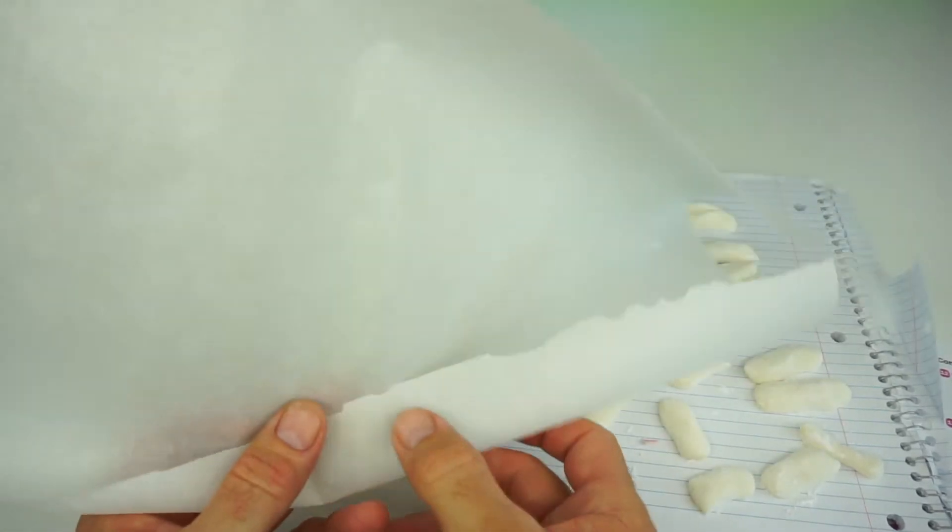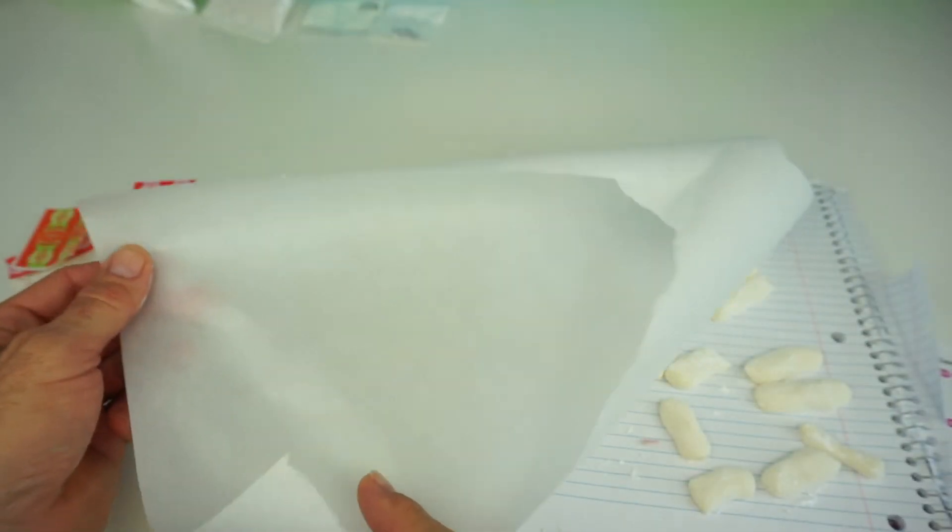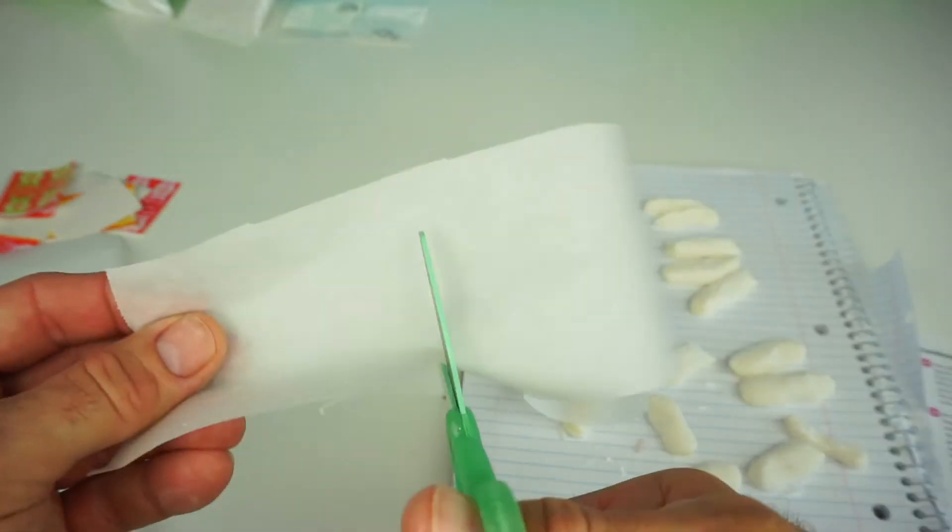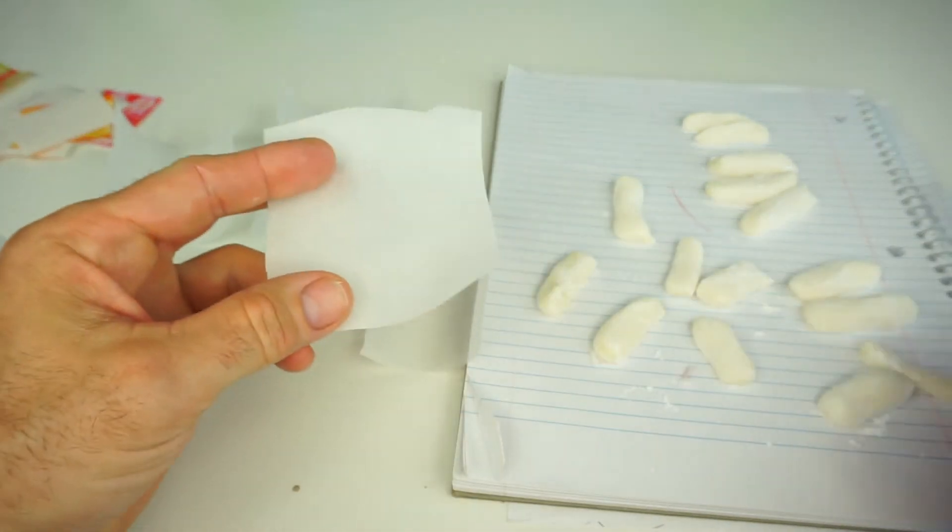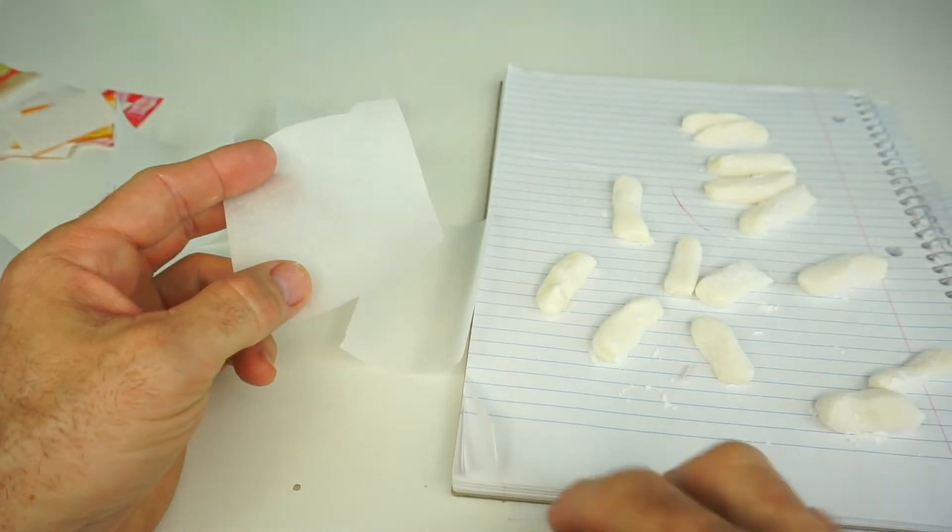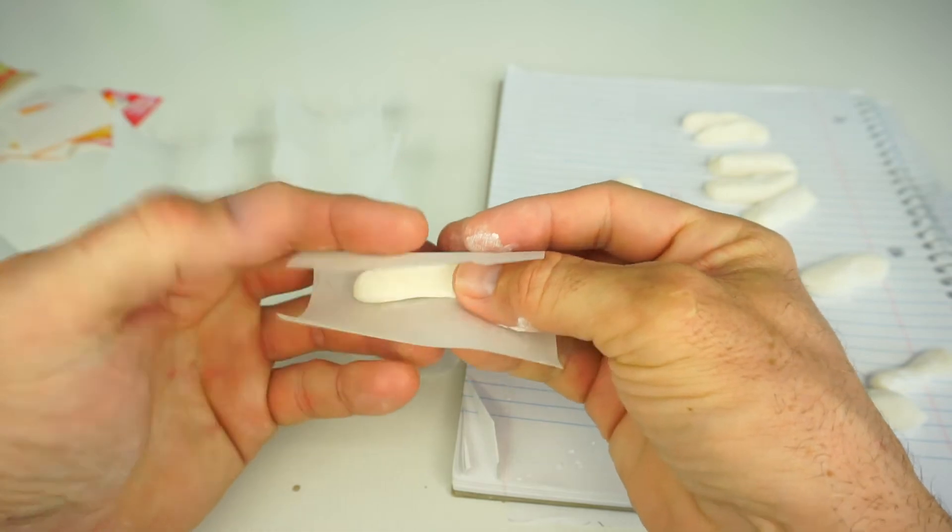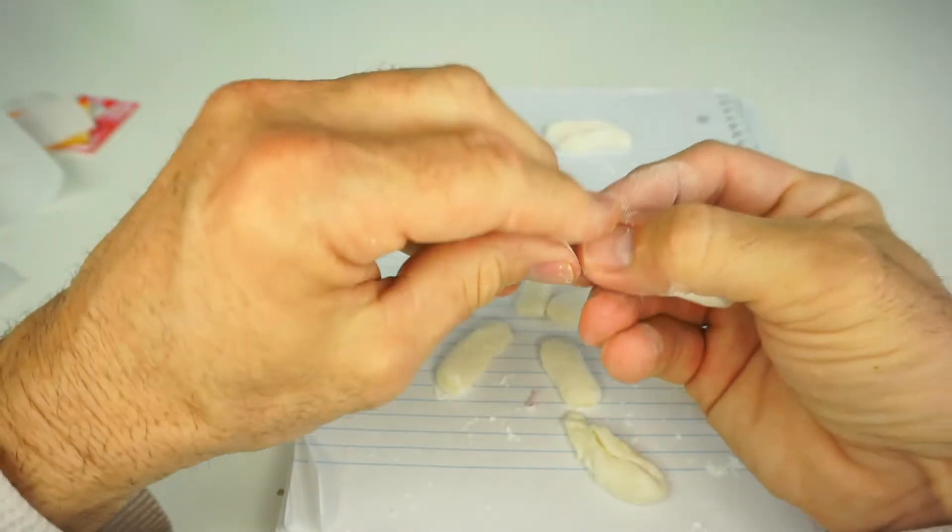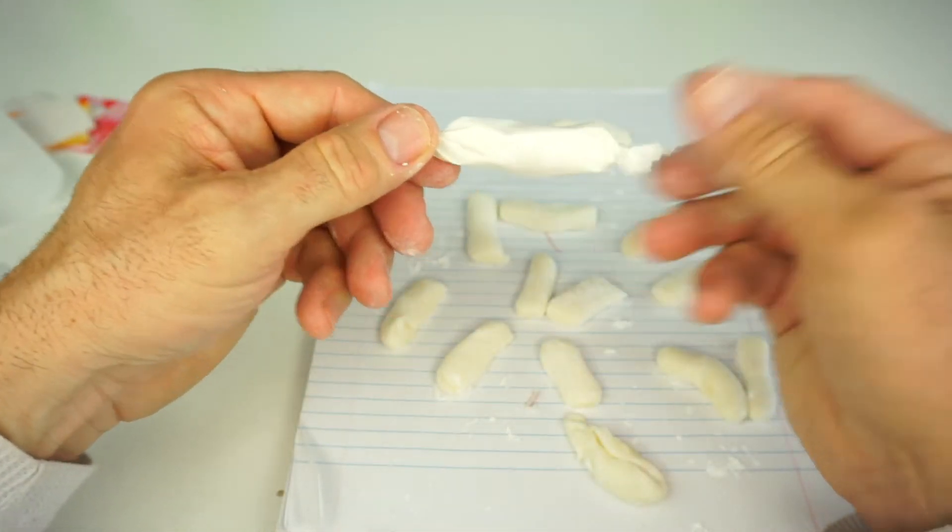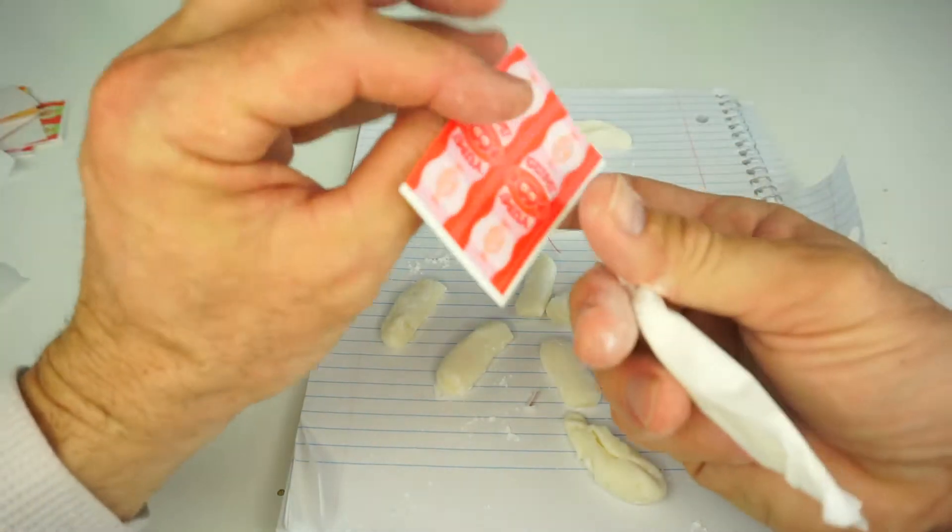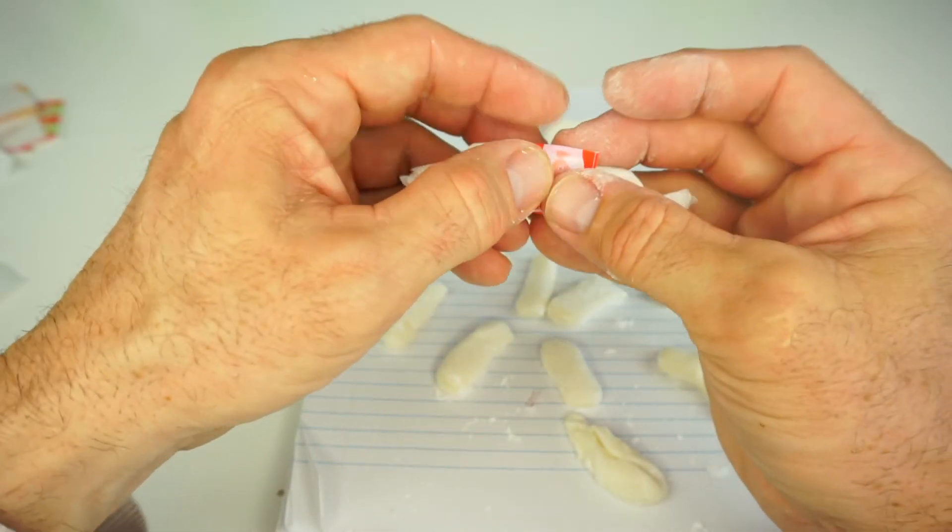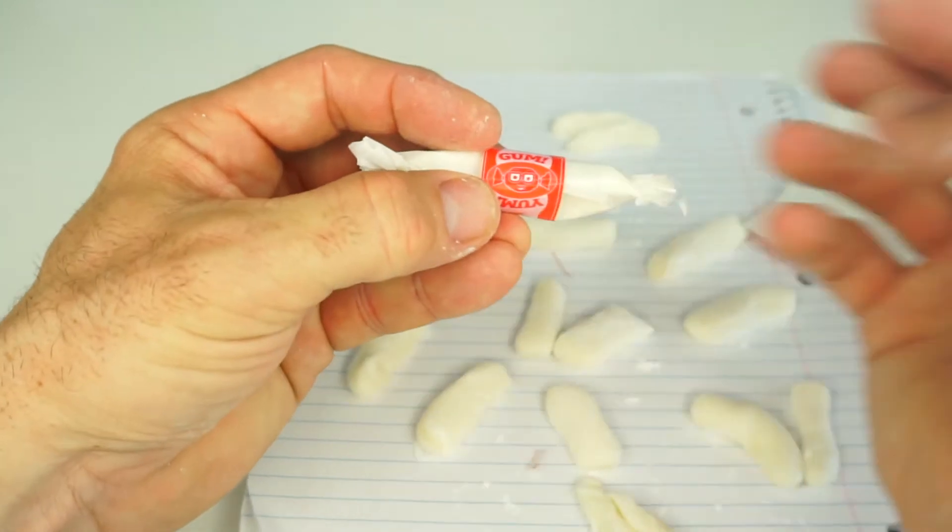So the next thing we're going to need to do is take our wax paper and cut some little squares. So take a piece of your wax paper, a piece of the gum, put it in the wax paper. And there you have your piece of gum. And then you take a label. If it sticks, it's a little bit powdery and you put it right on your wrapper like that. And then you have your piece of gum.